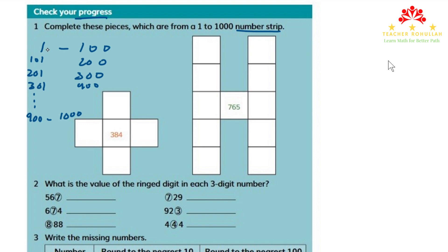So we start the number with 1, 2, 3, and so on up to 100, then 101, 102, 103, and so on up to 200. And with all numbers, we continue the same pattern.